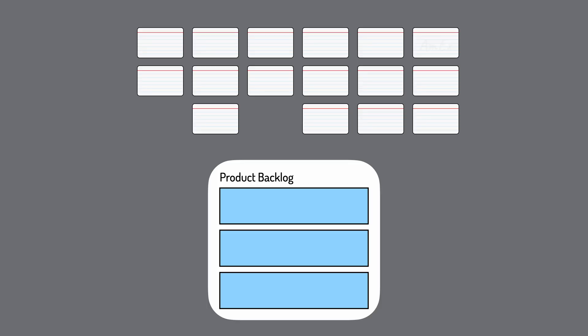First, any one card on a map can turn directly into a product backlog item. If we're building an app or site that collects payments, for example, we may have a card that says 'Pay with American Express card.' That's a product backlog item.